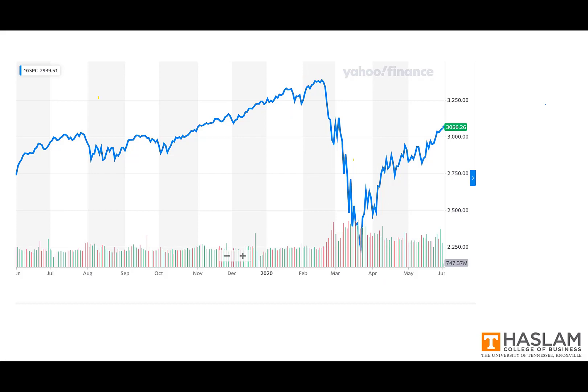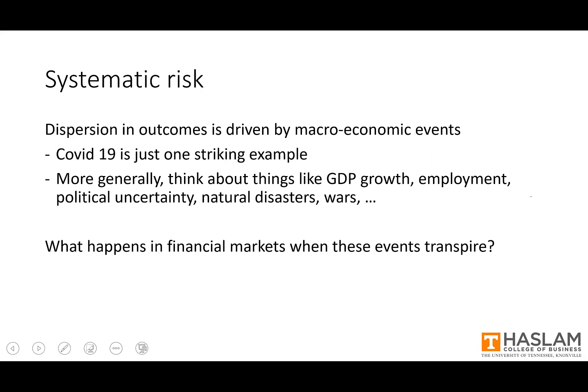The risk we observe here has a special name — we call it systematic risk. The dispersion we see in the S&P 500, the extreme up days and the extreme down days, all of this dispersion in outcomes is driven by macroeconomic or systematic events — that is, events that affect the entire system. The COVID-19 events in February and March are just one example, a very striking one, but just one example.